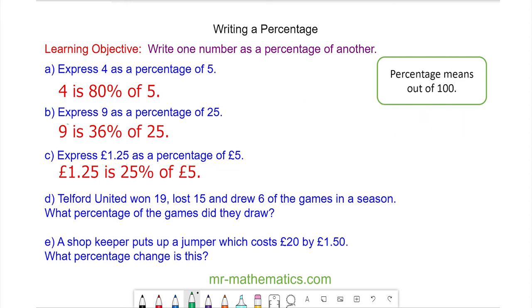For question D, Telford United won 19, lost 15, and drew 6. So this means they played 40 games in total. So our denominator is 40. What percentage of the games did they draw? Well, they drew 6 games out of the total.